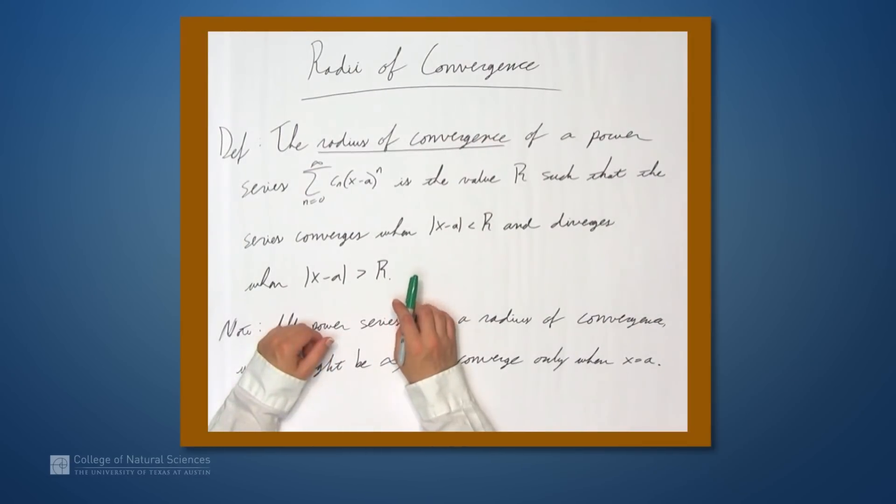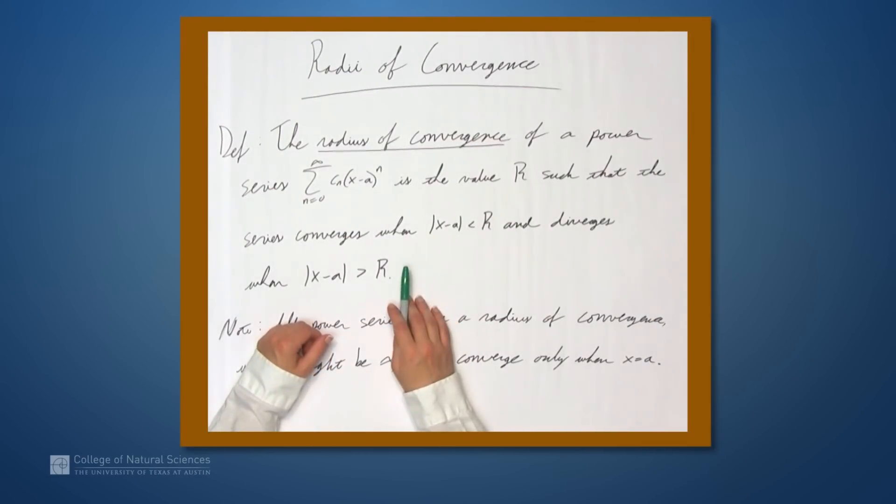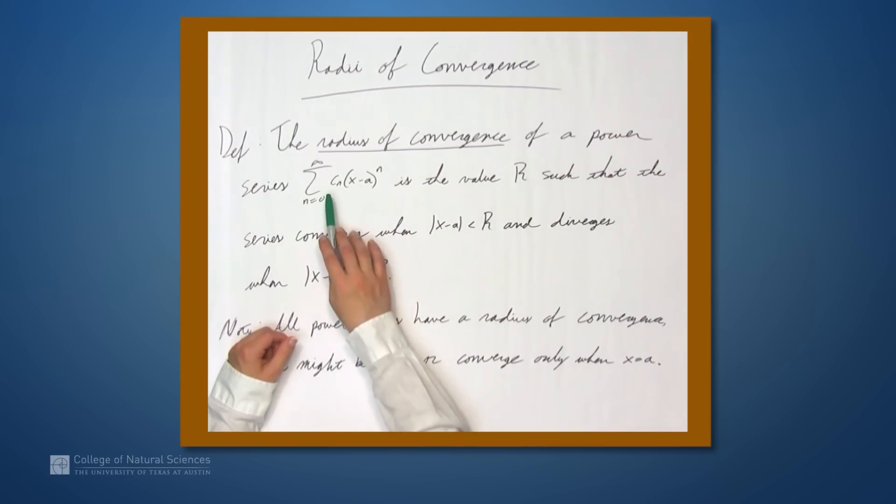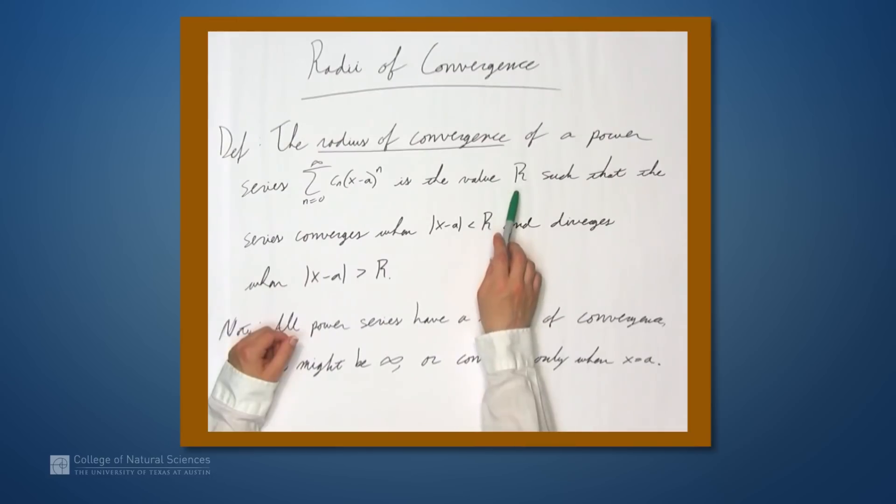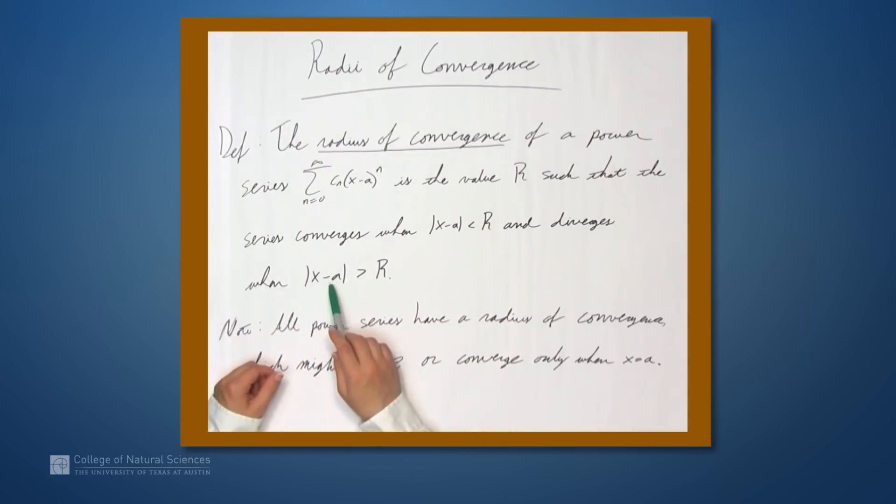We're here at the example table, and in this video we're going to be talking about radii of convergence. The radius of convergence of a power series c_n times (x-a)^n is the value r such that the series converges whenever |x-a| < r and diverges when |x-a| > r.